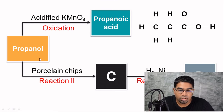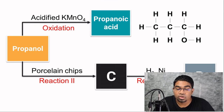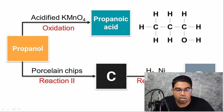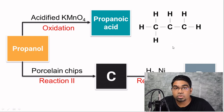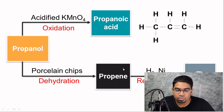Now let's look at reaction 2. What happens when we use porcelain chips? Going back to propanol — the hydroxyl group is on the carbon. With porcelain chips and heating, what occurs is dehydration. Dehydration is the opposite of hydration: hydration is the addition of water, and dehydration is the removal of it. The hydroxyl group and the adjacent hydrogen are both removed, and in their place a carbon-carbon double bond forms. This gives a three-carbon compound with a carbon-carbon double bond — the functional group of alkenes. Therefore, compound C is propene, and this reaction is dehydration.